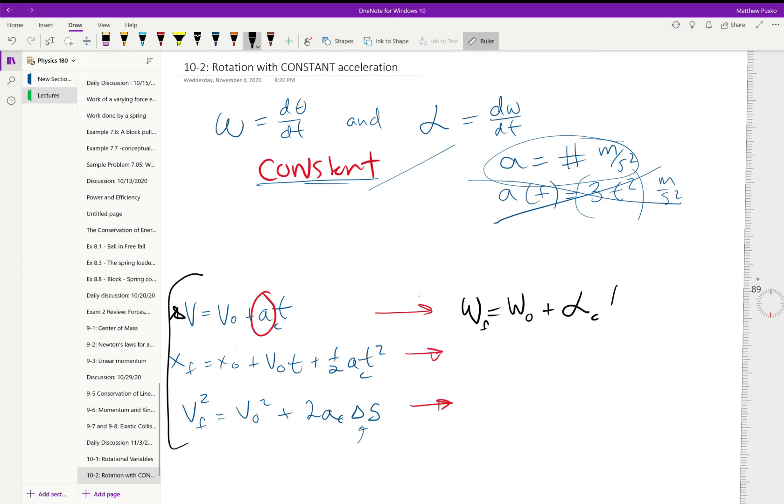So this is a constant, some number radians per second squared. Okay, and the second equation over here turns into...